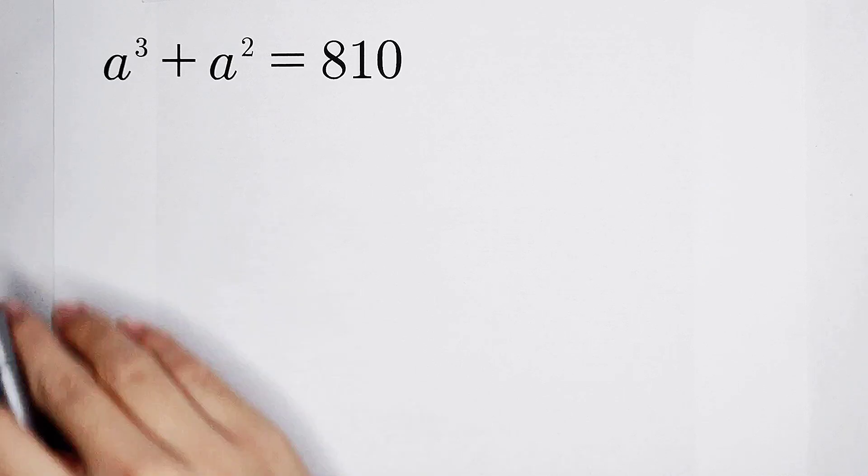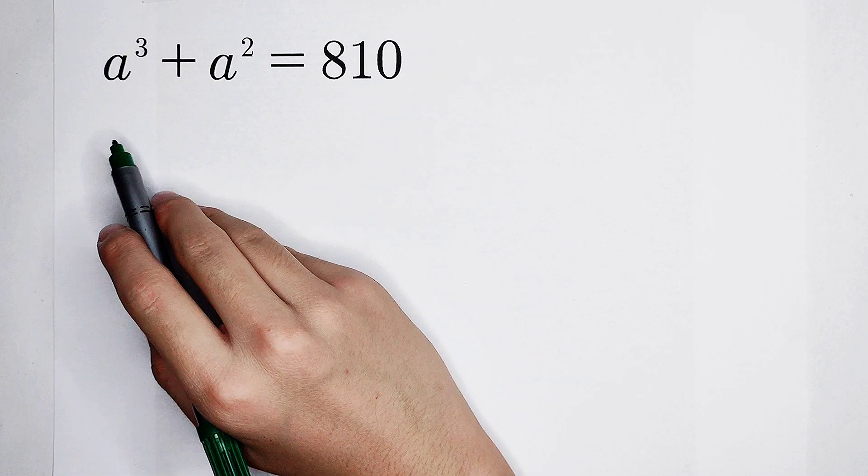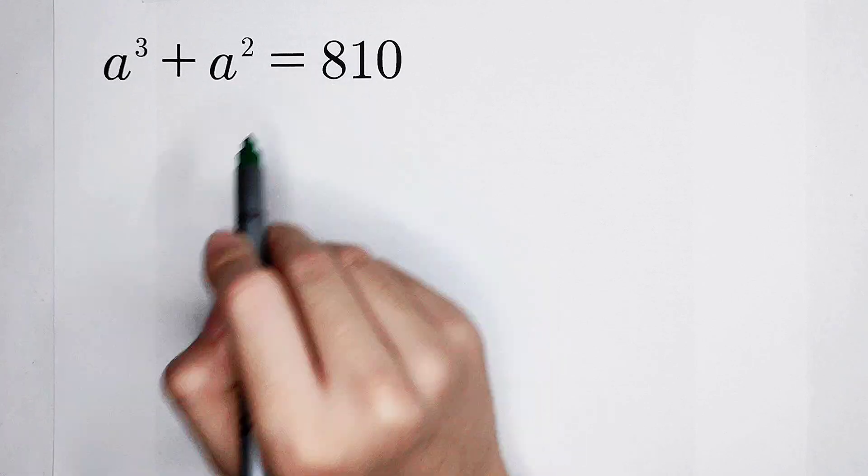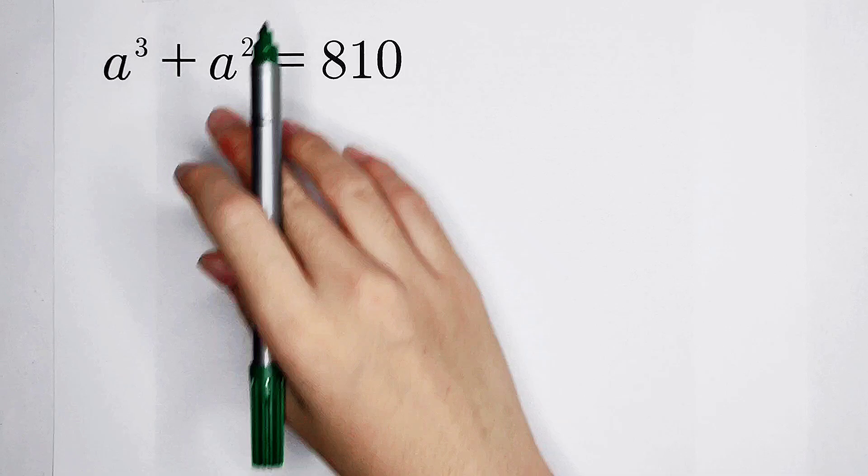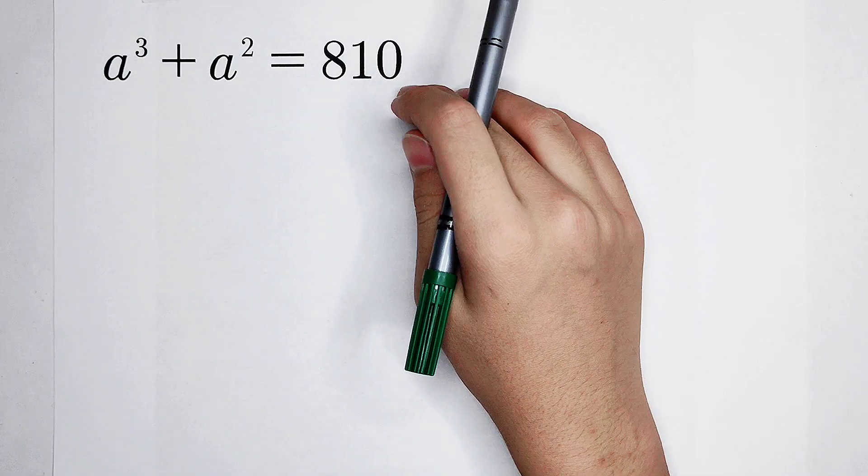Welcome to Math We Know. Solve this equation: a cubed plus a squared is equal to 810. How should we solve it? Of course, this number is quite large.